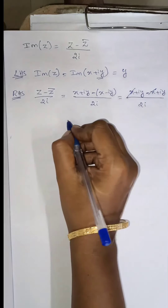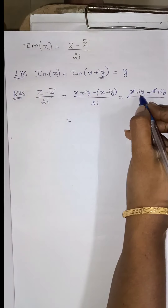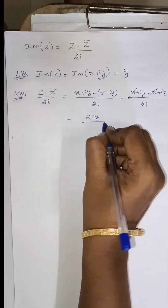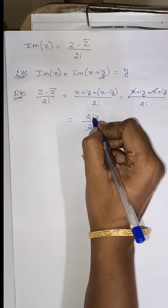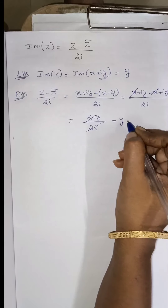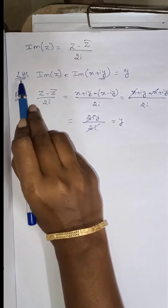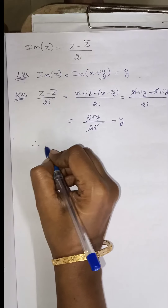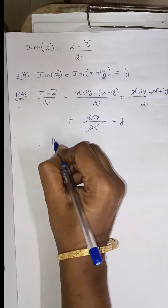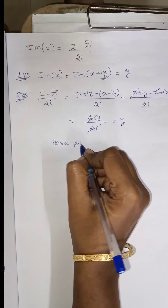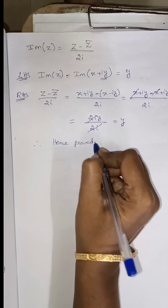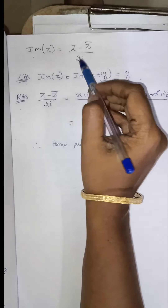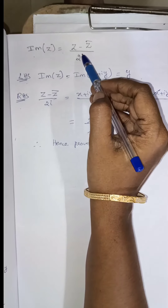X plus iY minus bracket gives minus X plus iY. X minus X cancels, and iY plus iY is 2iY divided by 2i, so 2i and 2i cancel giving Y. LHS equals Y and RHS equals Y. Therefore hence proved. The imaginary part of Z equals Z minus Z bar divided by 2i.